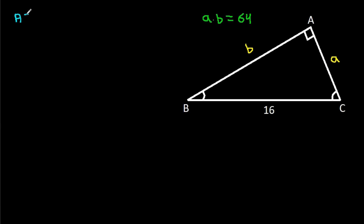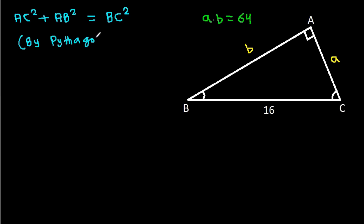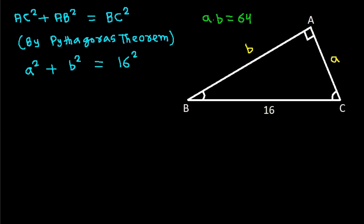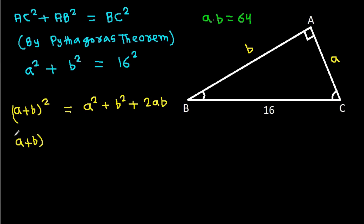And AC² plus AB² equals BC² by Pythagoras theorem. So a² plus b² equals 16² equals 256.